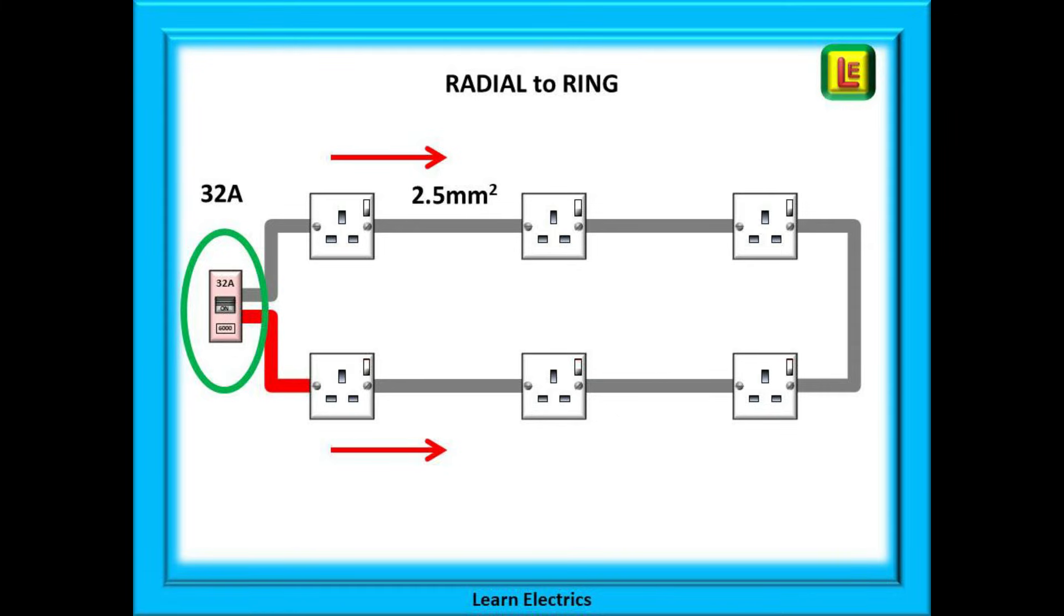Suppose that we can connect to the end of that circuit back into the breaker. Now we have two cables coming out of the breaker. Current can flow along both legs. We have made a ring circuit and we can now use 2.5 millimeter cable instead of 4 millimeter.